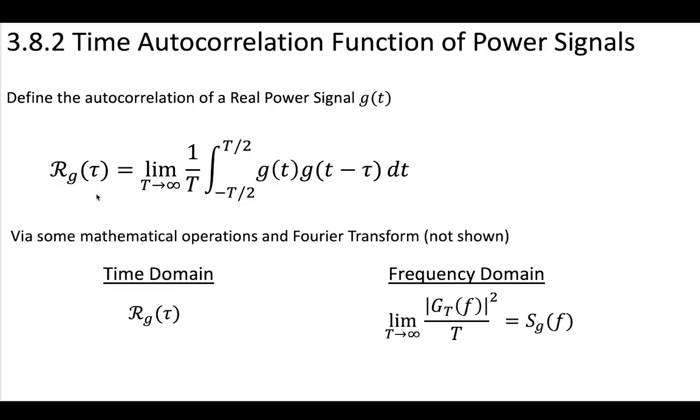And in the time domain, we would have this autocorrelation, and then on the frequency domain, we have this definition of the autocorrelation of the time domain function transformed into the frequency domain. And that was the power signal density.